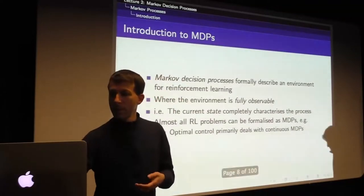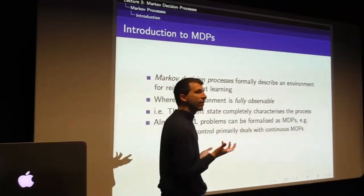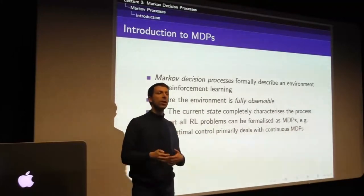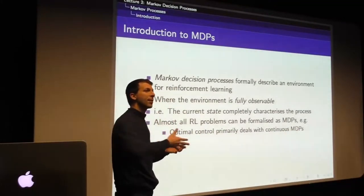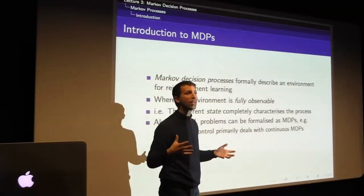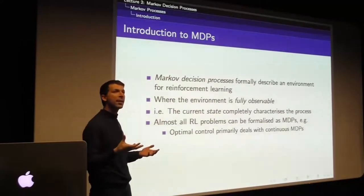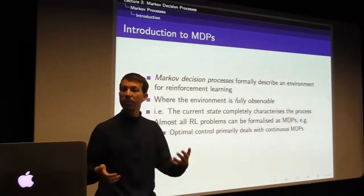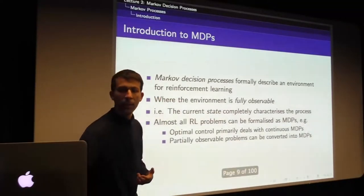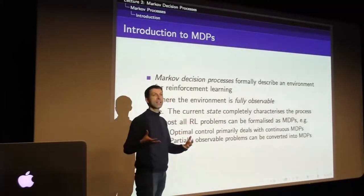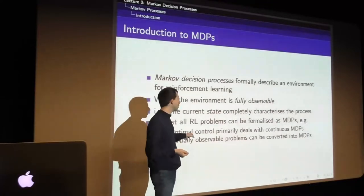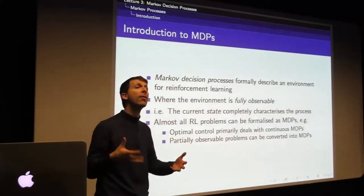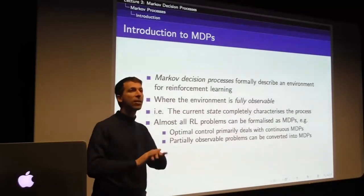The nice thing about this formalism is that almost all reinforcement learning problems can be formalized as a Markov decision process. Even problems people might not first think of as MDPs - like optimal control with differential dynamics describing a fluid where you want to find the optimal way to make your octopus swim - can be handled. That's an extension to MDPs: a continuous Markov decision process with continuous actions. Optimal control actually deals with that case.